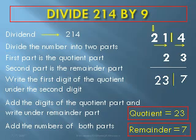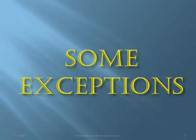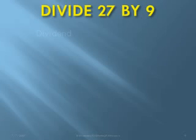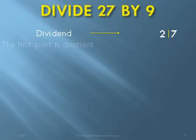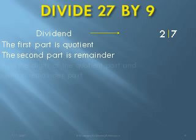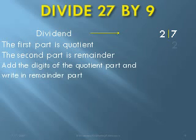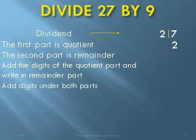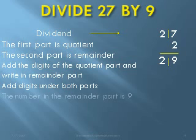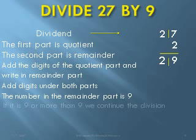Now we see some special cases in the Nikola method. Example: divide 27 by 9. The dividend 27 is divided into two parts — the first part is the quotient and the second is the remainder. Add the digit of the quotient part and write it under the remainder: 2 is written under 7. Adding gives 2 and 9. Since the number in the remainder part is 9 or more than 9, we continue the division process.